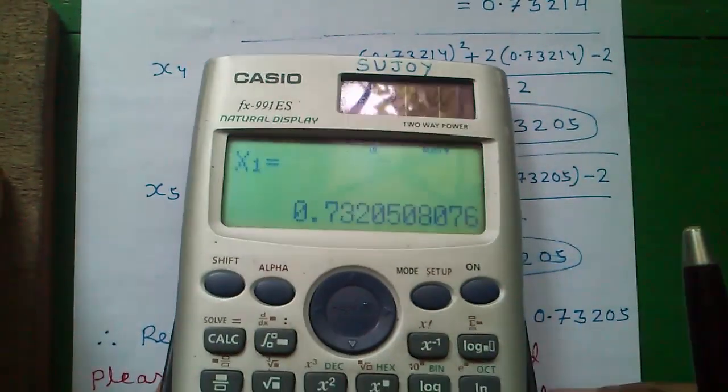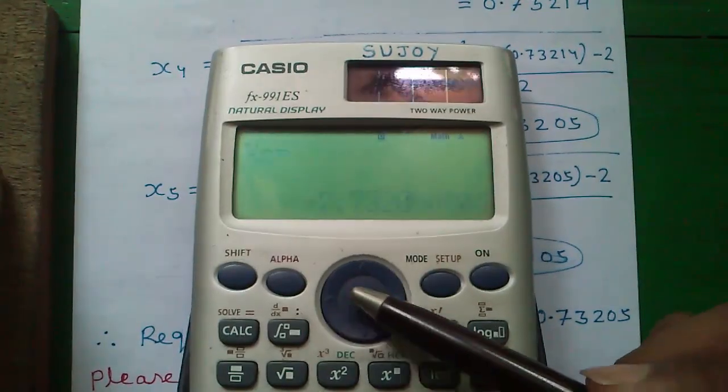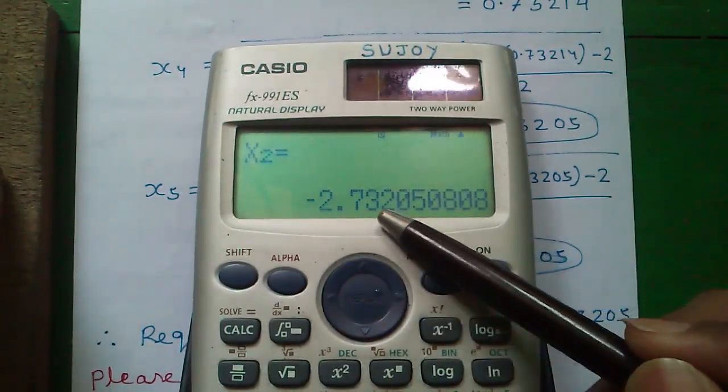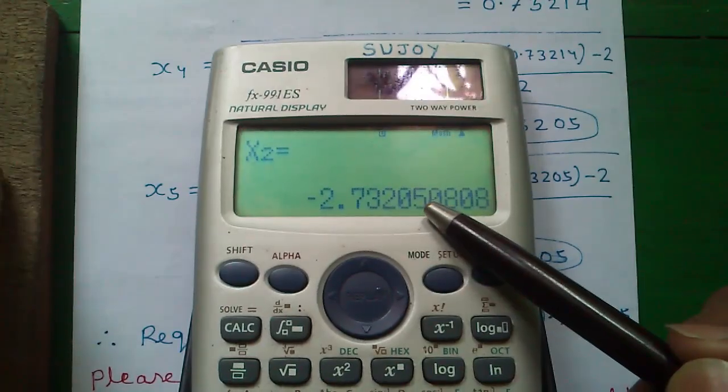But it will also give you the second root, that is the negative root, minus 2.73205. Isn't it cool?